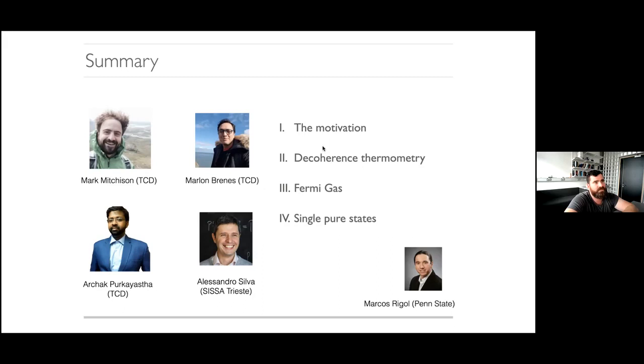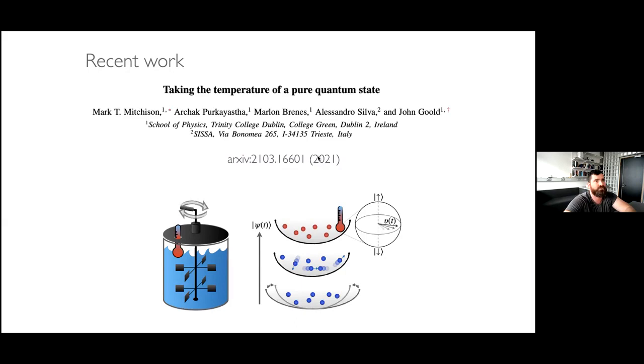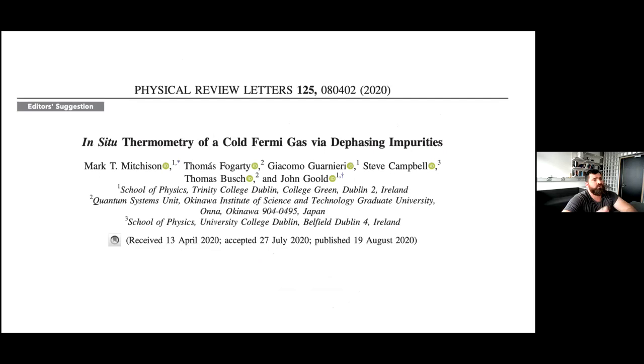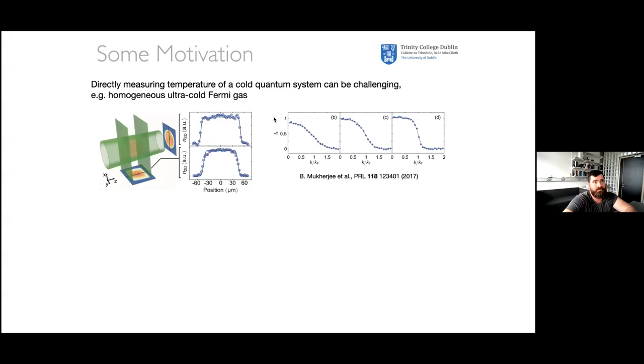I'm going to tell you over the next 20 minutes about the basic idea of decoherence thermometry. Then I'll tell you about something conventional—not a pure state—really a non-interacting Fermi gas and how you can use this decoherence thermometry to estimate the temperature with cold atoms in particular in mind. Then I'll move on to the whole point of what I want to talk about: single pure states thermometry, which we recently put on the archive a couple of months ago, still waiting for referee reports back. But to get to pure state thermometry, I want to tell you about work we did the previous year.